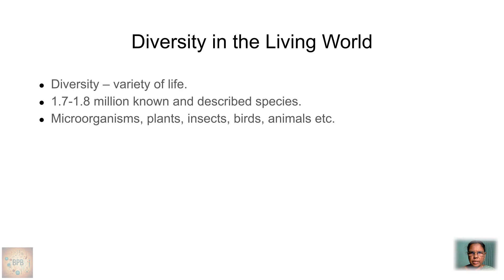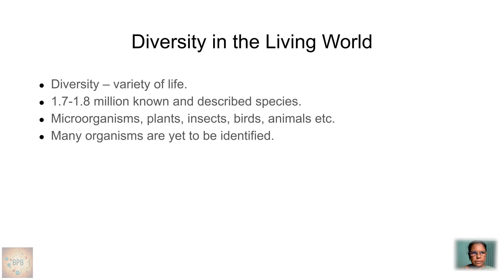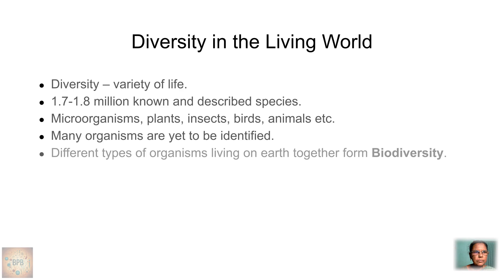These include all species — microorganisms, plants, insects, birds, animals, etc. Some organisms are so small they cannot be seen with the naked eye, while some are very huge in size. There are also so many organisms yet to be identified — unknown organisms are still out there. Different types of organisms exist in this world.